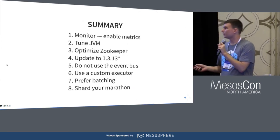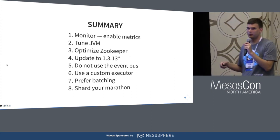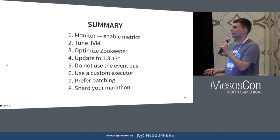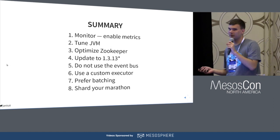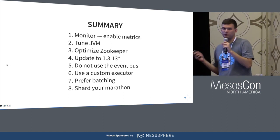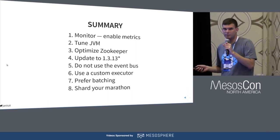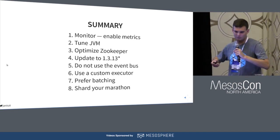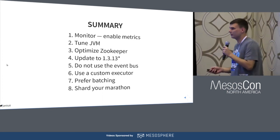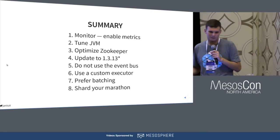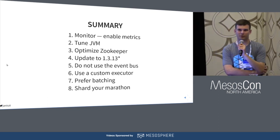To sum up: monitor and measure; tune JVM; optimize ZooKeeper and remember to tune ZooKeeper's JVM too since it's written in Java; update to the latest stable version that works for you — whether that's 1.3.13, 1.4.7, or 1.5; avoid EventBus and prefer custom executors for synchronous events; prefer batching; and if all of the above doesn't help, shard your Marathon.